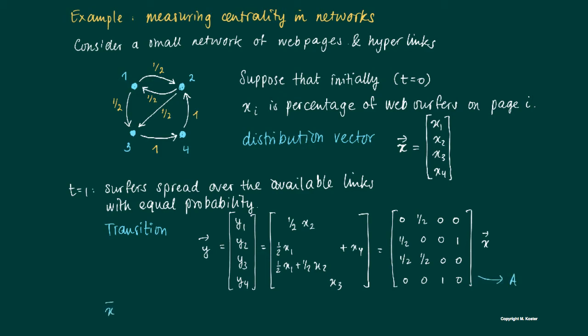So actually Y is a transformation of X, so the distribution of the surfers at moment t=1 is actually a vector X_1, and it's basically calculated by multiplication of a matrix A times X. So what happens? We start off with a distribution vector X, we get a vector Y, X_1, Z is X_2, X_3, etc.